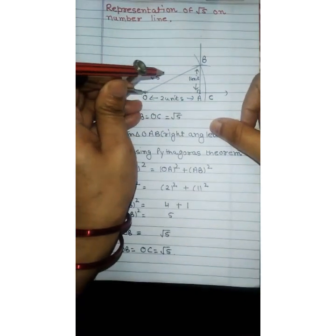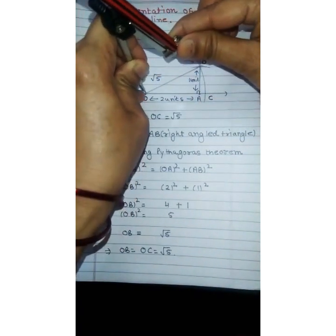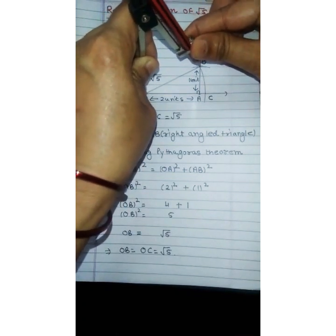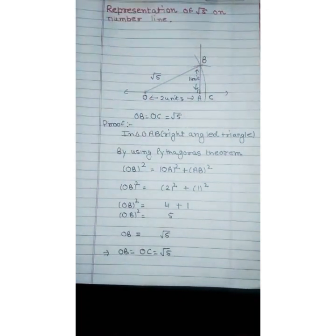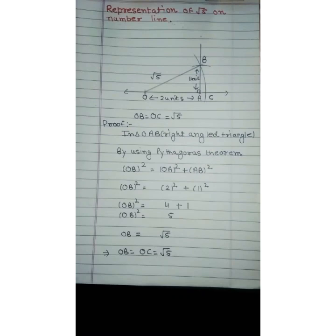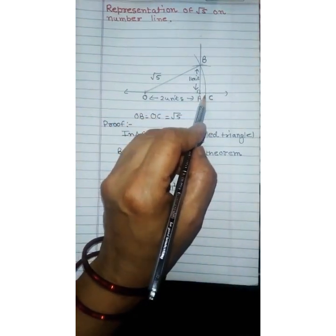At last with O as center draw an arc of measure OB which intersects the number line at C. It means here OC is equal to √5 units.